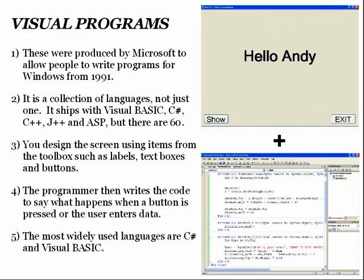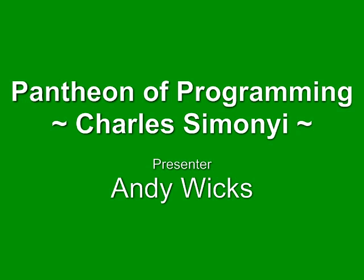He also invented the idea of each thing on the screen having its own little code. So a button would start with BTN, a form would start with FRM, an option button would start with OPT, and so on. Then you gave it their proper names after that. That way, when you're writing computer programs in a visual language, you know exactly what it is you're playing with at the time. And that makes your programming a lot easier. One of the things that you have to learn when you program is that you rename first, then you write the code. Your life will be so much easier.